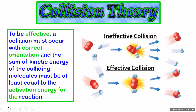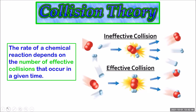You'll remember from our collision theory video that in order to produce a reaction, a collision between molecules must occur with correct orientation to form new bonds and enough energy to break the existing bonds in the molecule. The scientific way to say this is that the sum of kinetic energy of the colliding particles must be greater than or at least equal to the activation energy for the reaction. The rate of a chemical reaction depends on how many of these effective collisions are occurring per second.